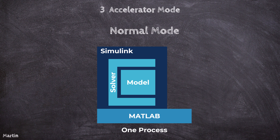This approach ensures that simulation results remain as close as possible to the model's design, without abstractions or approximations introduced by code generation. In Normal Mode, simulations run directly based on the model, making it slower for large models compared to other modes. It is ideal for building, debugging, and refining models during the early stages of development, and works well for small to moderately complex models where performance is not a primary concern.